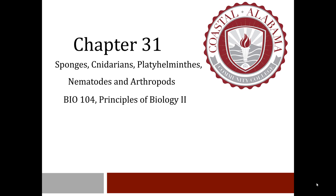In Chapter 30, we introduced the animal kingdom and explored animal evolution by way of the animal phylogeny. We also examined how systematicists use fossil morphology, developmental patterns, and molecular data to determine animal relationships. In this chapter, we'll begin with an introduction to sponges, cnidarians, and ctenophores — groups characterized by asymmetry, radial symmetry, and biradial symmetry, respectively.